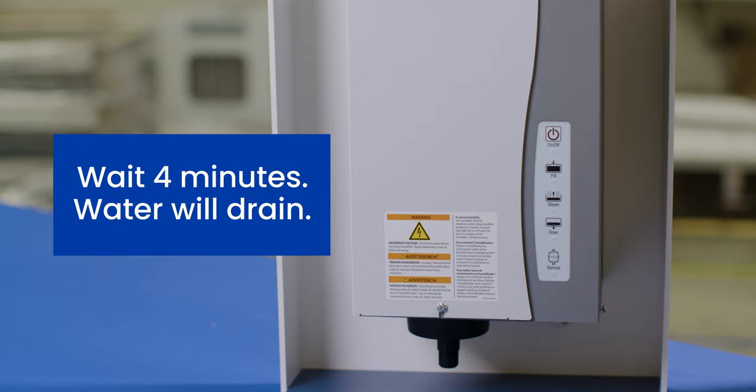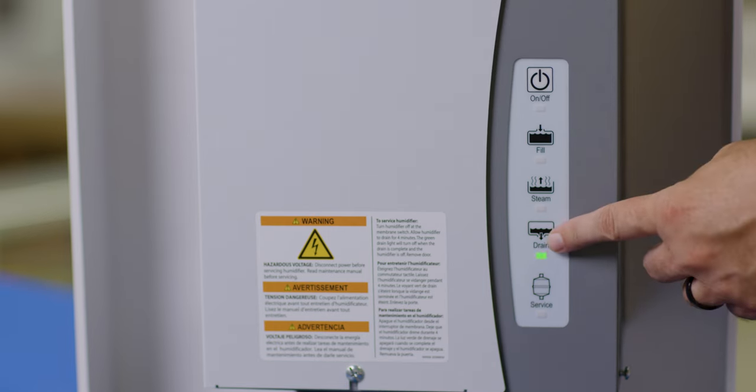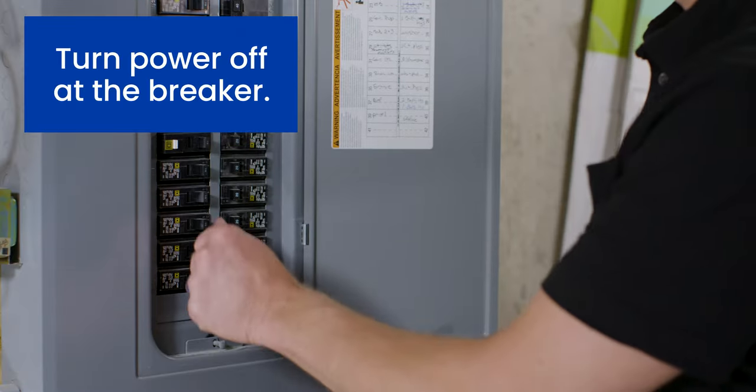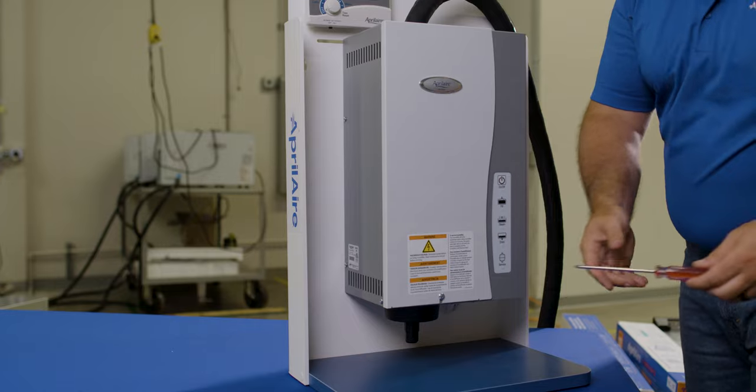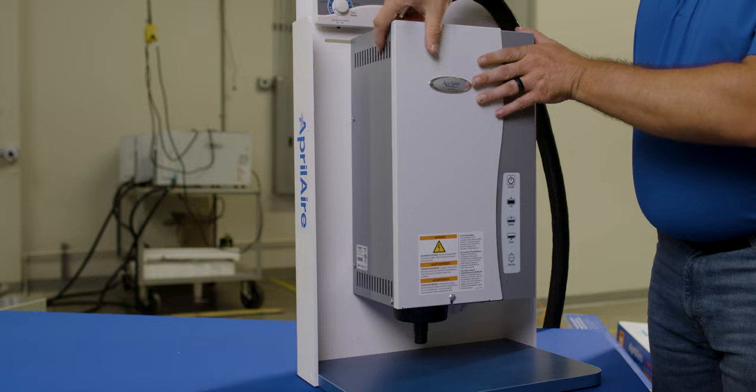Wait four minutes to make sure all the water is out of the unit. After that four minutes, the green LED will stop flashing and both valves will shut. Next, cut the power to the unit by turning it off at the breaker. Now you can take the cover off the steam humidifier. Loosen the screws at the bottom and slide the cover off.